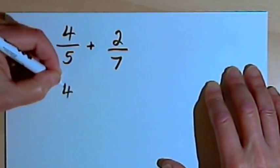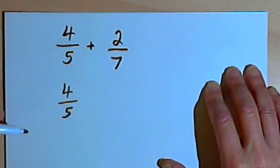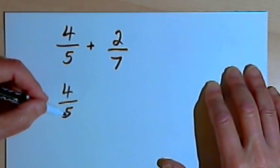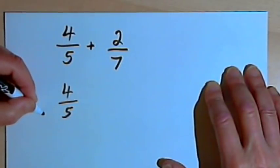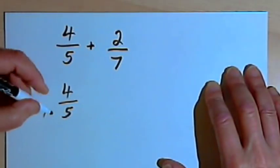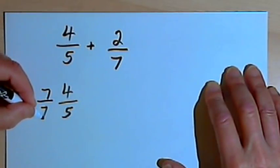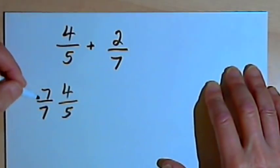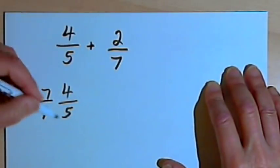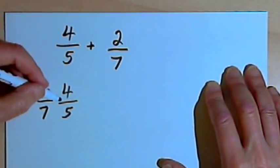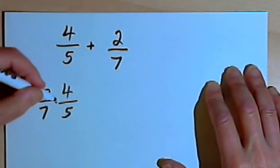I'll take the first fraction, 4 over 5, and remember I wanted to multiply the denominator by 7 to make it 35. Well if I multiply the denominator by 7, I've got to multiply the numerator by 7 also. I've got to multiply them both by the same thing, otherwise I'm changing the value of the fraction. So I'll multiply it by 7 over 7.